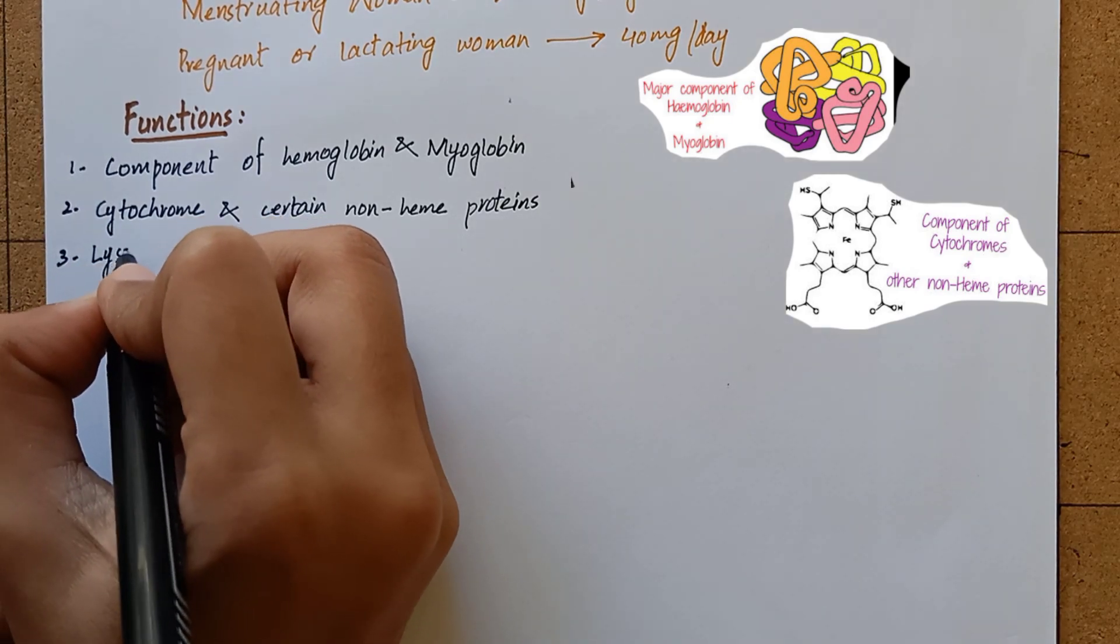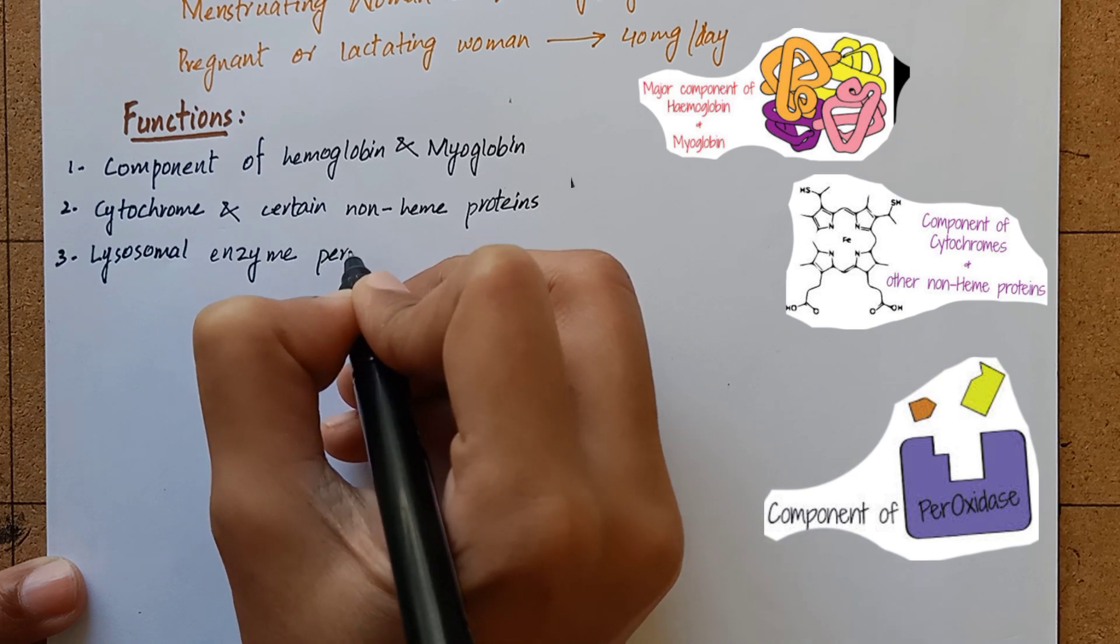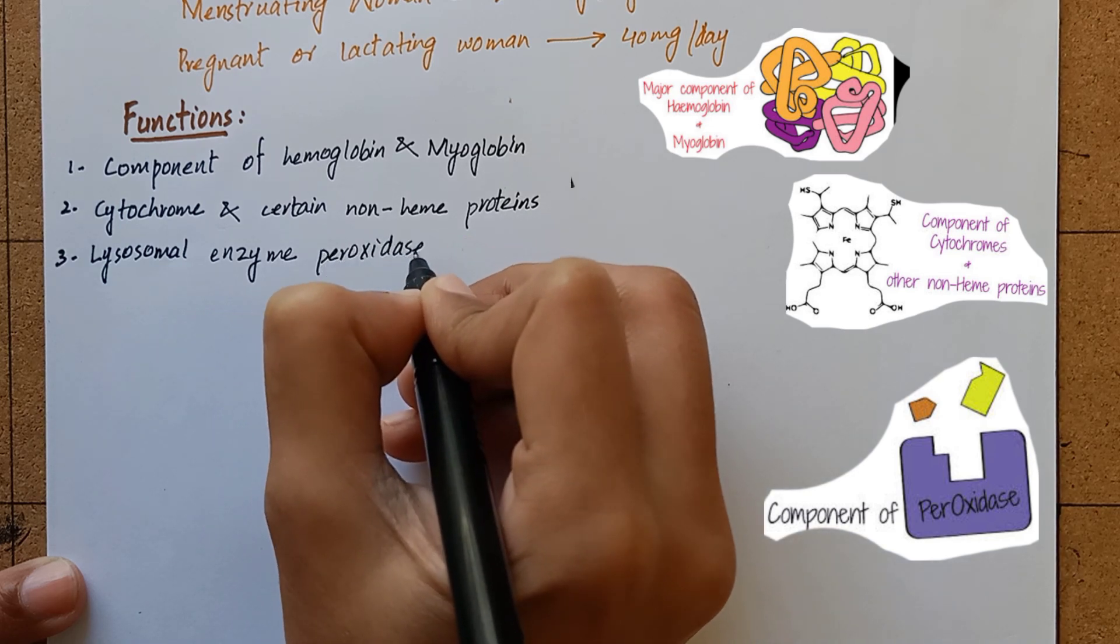The lysosomal enzyme peroxidase also contains iron. Peroxidase is required for phagocytosis of bacteria by neutrophils.